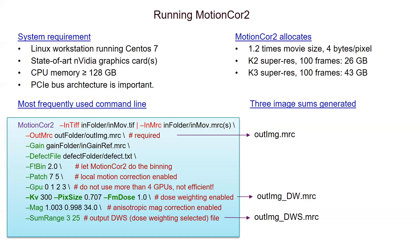Providing high tension voltage, pixel size, and frame dose in the command line will enable dose weighting. If any of these three numbers are missing, dose weighting will be disabled. The unit for pixel size is Ångström; frame dose unit is electrons per square Ångström. If there is anisotropic magnification in your image, MotionCor2 can perform magnification correction using three numbers — the major scale, minor scale, and orientation of the major axis — output from the CTFFIND program called mag_distort_estimate.